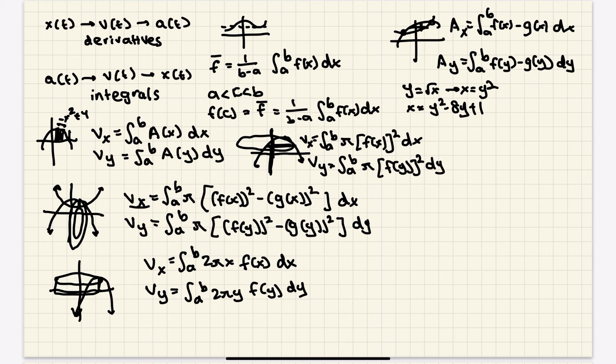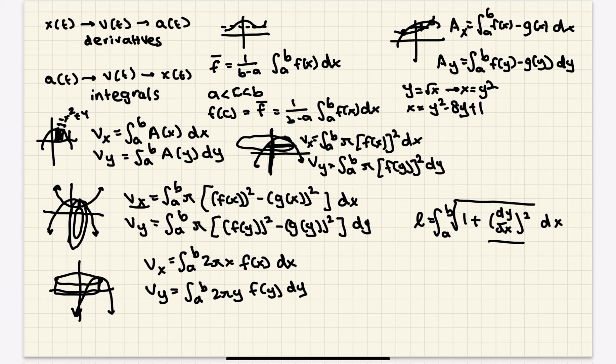That's it for AB content review. There's one more short topic for BC. BC students, stay with me — we're going to talk about arc length. If you have a function, what is the length of that function — the distance a particle travels along that curve? The arc length equals the integral from a to b of the square root of 1 plus (dy/dx) squared dx. You write the derivative of the function, plug it in, square it, add 1, take the square root, and integrate. Use a calculator if needed.